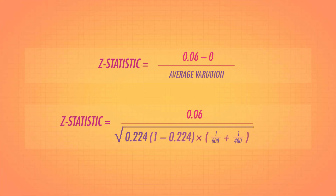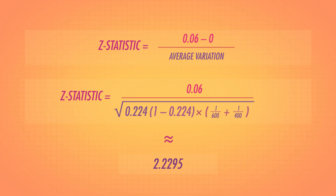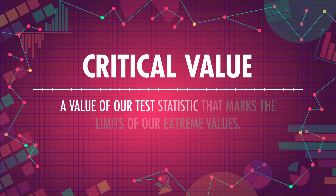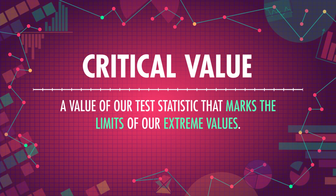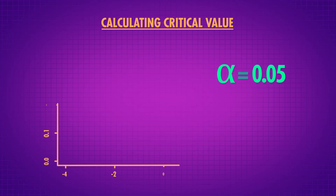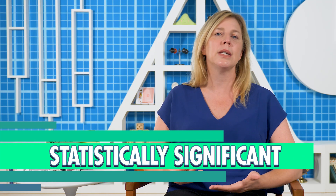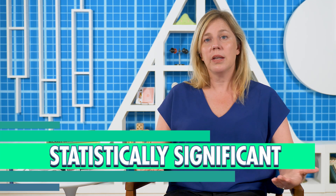We found evidence suggesting the null might not be accurate. There are two main ways of telling whether this z-statistic, which is about 2.2295 in our case, represents a statistically significant result. The first way is to calculate a critical value — a value of our test statistic that marks the limits of our extreme values. A test statistic that is more extreme than these critical values, towards the tails, causes us to reject the null. For a z-test with alpha equals 0.05, the critical values are 1.96 and negative 1.96. If your z-statistic is more extreme than the critical value, you call it statistically significant. So we found evidence, in this case, that the flu shot's working.